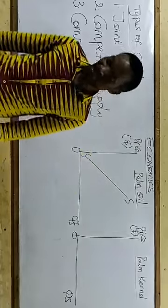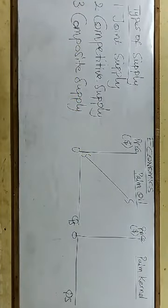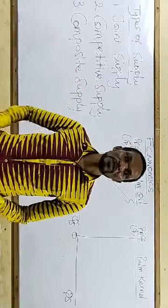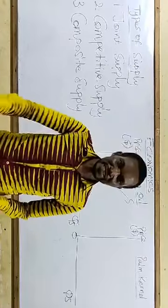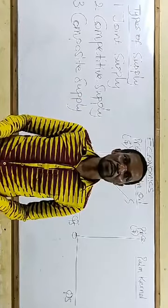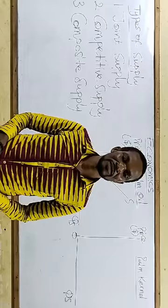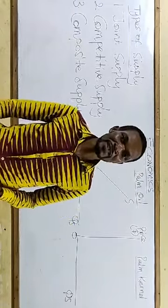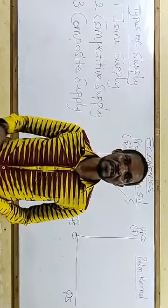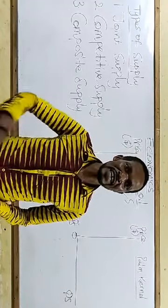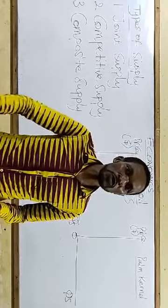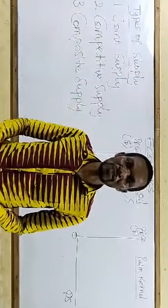What is joint supply? If you hear joint supply, it simply means that the supply of one commodity will lead automatically to the supply of another commodity because they are from the same source or the same raw material. Put in another way, joint supply is when a product is a byproduct of another commodity. When in your effort to produce one commodity, you are forced to produce the other because it becomes the byproduct of what you are producing.